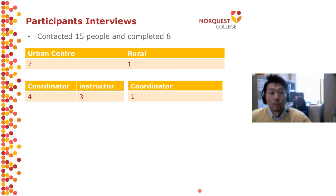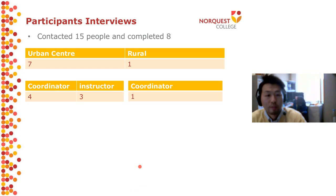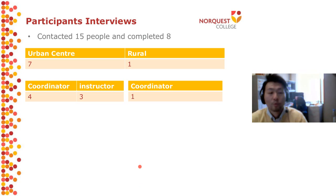We were aiming for as many as ten interviews. We contacted 50 people and eight agreed to be interviewed. Of those eight, seven were from urban centres and one was from a rural community. Of the seven from urban centres, four were coordinators and three were instructors; the one from the rural community was a coordinator.